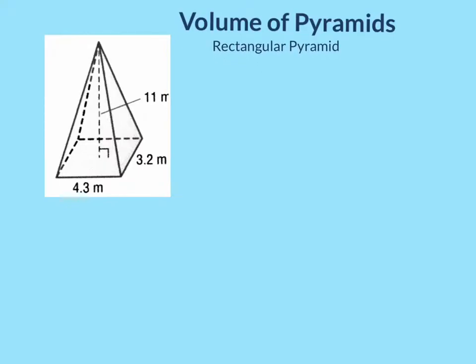So in this case we know that we will have V equals 1/3, and we're going to look for what type of base we have. In this case we have a rectangular base.